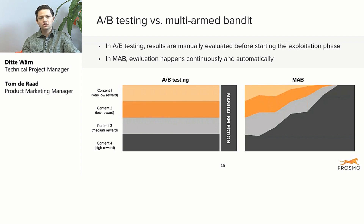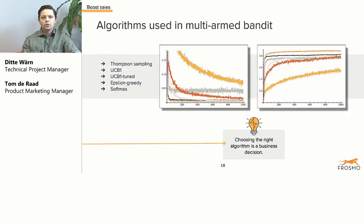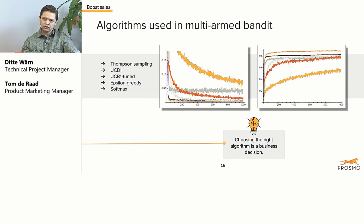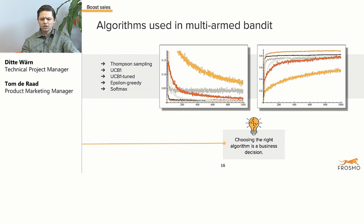That being said, how quickly you reach a winner, or how quickly you start dropping out other variations, all depends on which algorithm you pick. Within Frosmo, we use five algorithms at the moment: Thompson Sampling, Upper Confidence Bound 1, UCB1-Tuned, Epsilon Greedy, and Softmax. The main difference between all of them is simply how aggressive they are — how quickly you assign traffic to a winning variation, how quickly you drop out others, and whether you assign any traffic to variations that aren't performing well. It's really a risk versus reward.